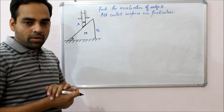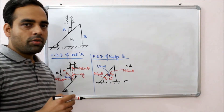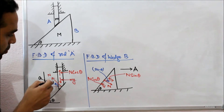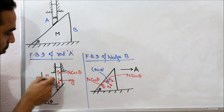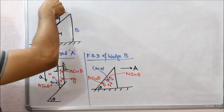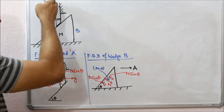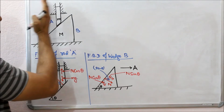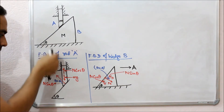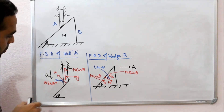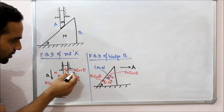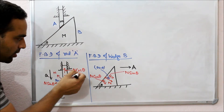Now let us draw the free body diagram of this problem. I have drawn the free body diagram of rod A and wedge B. For rod A, the forces acting on the rod are Mg and the normal reaction force from the surface of the wedge. Since the system is released, the rod moves in the vertical direction as its motion is restricted along the horizontal direction. Let small 'a' be the acceleration of the rod along the vertical direction. The forces along the vertical direction are Mg and the component of normal force N cosθ.